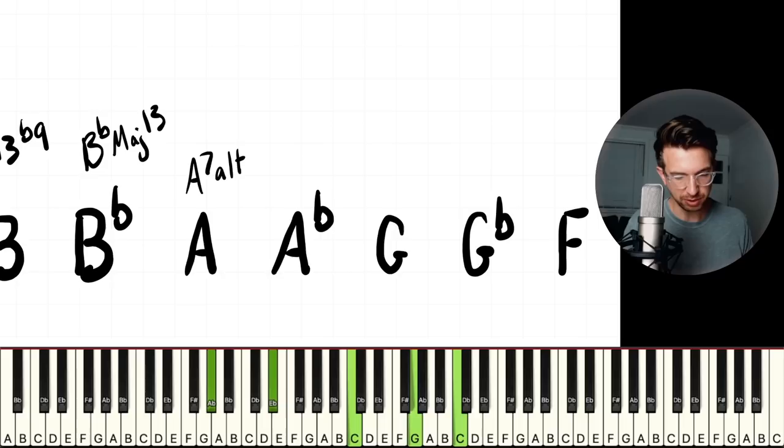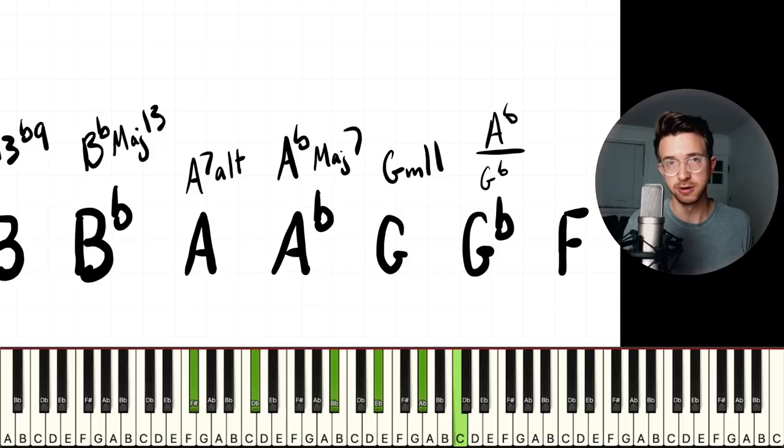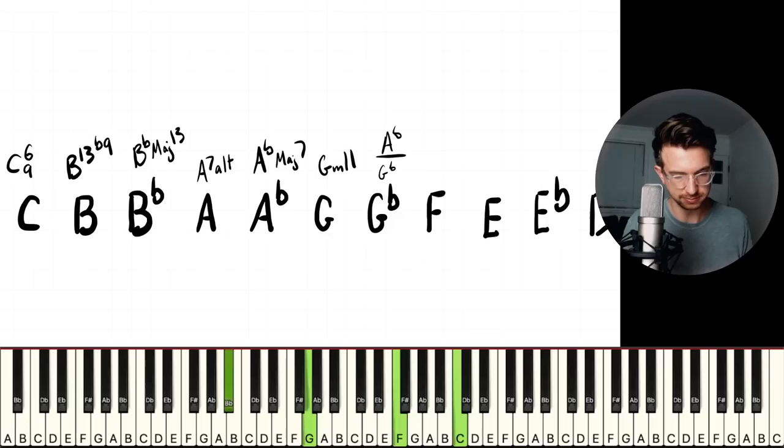A flat. We're gonna go with A flat major seven. Then we'll go with G minor 11. And then let's do A flat over G flat. Sort of like an A flat triad over a G flat triad. It's a nice sound that's a big spread in the left hand. You don't have to do that. You can play it like that if you want. Let's hear what this sounds like so far.